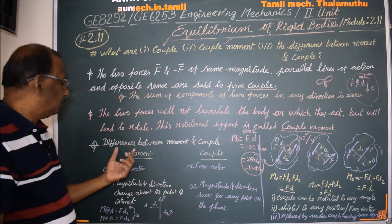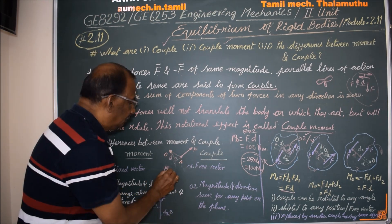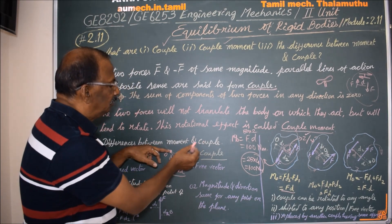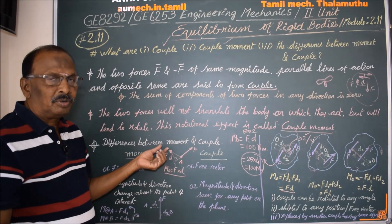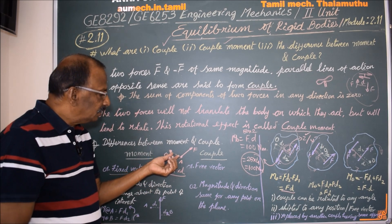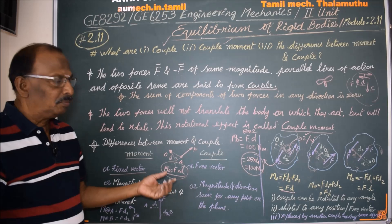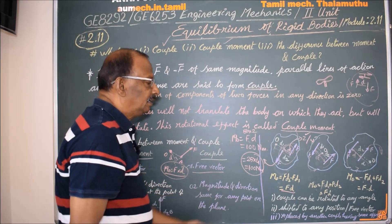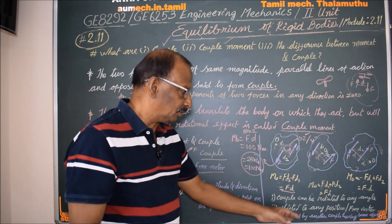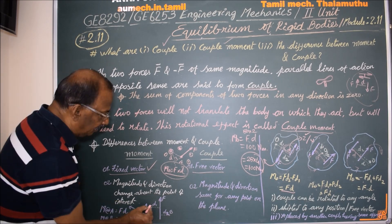Now, the difference between moment and couple. The moment M equals F into D — it is the rotational effect of a force about a point. The moment is a fixed vector. If we change the point of interest, the moment value will vary — the magnitude and direction change about the point of interest.